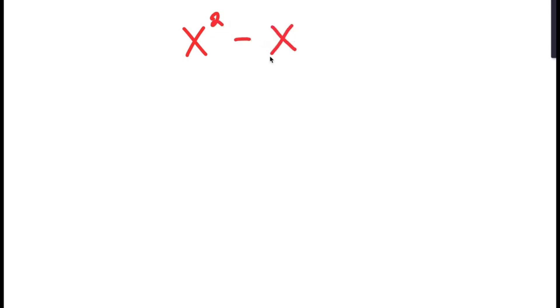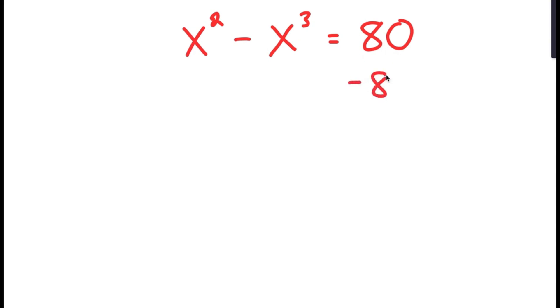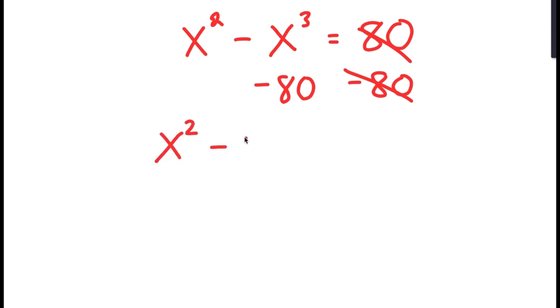In this video, I'm going to solve the equation x to the power of 2 minus x to the power of 3 is equal to 80. To solve this equation, I'm going to first start by subtracting 80 on both sides. So now I get x squared minus x cubed minus 80 is equal to 0.